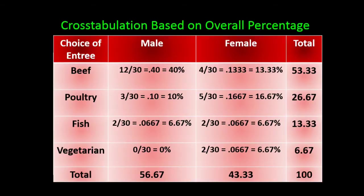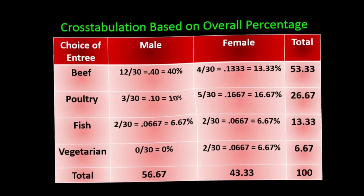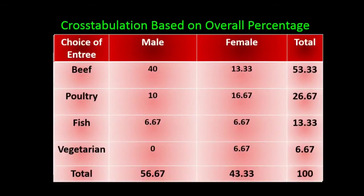This table is an overall percentage distribution. We can take this overall percentage distribution and turn it into a row percentage distribution or a column percentage distribution, depending on how we want to look at the data. We got the overall percentage by taking each of the cell counts and dividing by the grand total of 30.